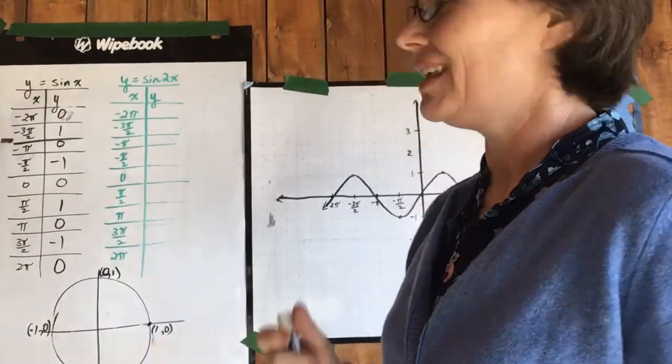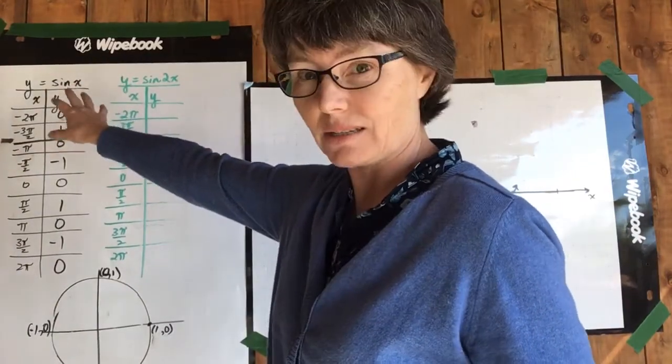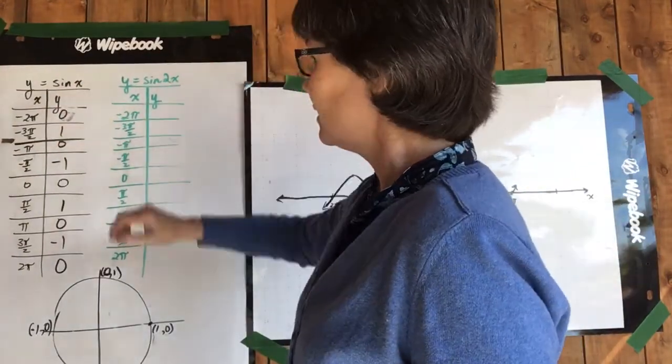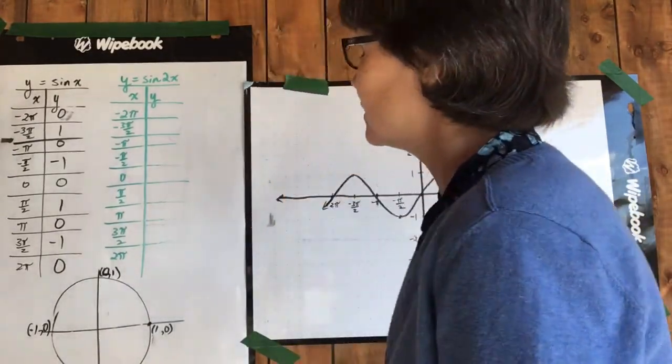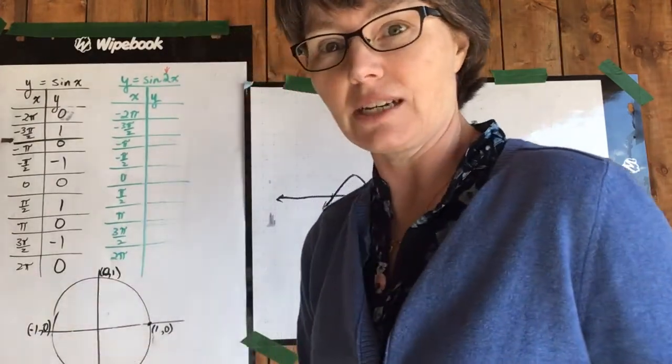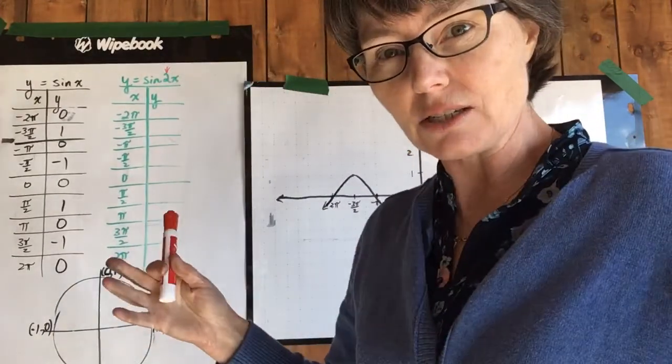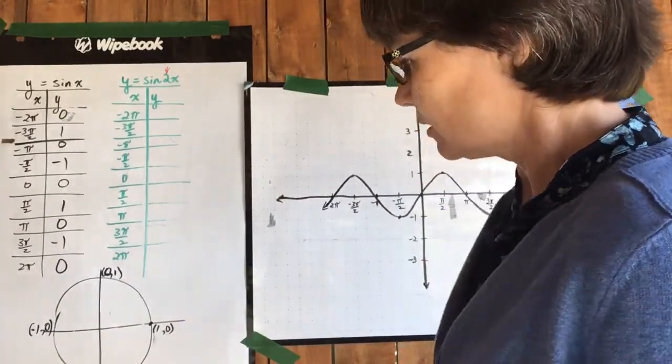The difference between y equals sine x, the most basic sine function, and this is that 2. It's in the B position, and therefore it's going to change the period. It's the horizontal stretch. It's going to change the period of that function.